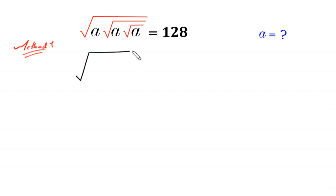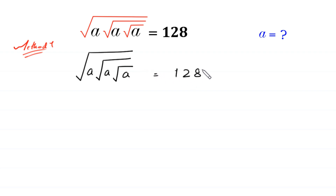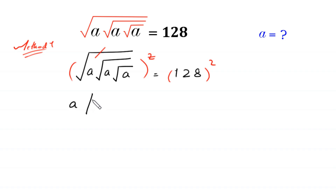Square root of a times square root of a times square root of a is equal to 128. We take the square of both sides of this equation. This square will cancel out with this square root, and here we are left with a times square root of a times square root of a is equal to 128 squared.